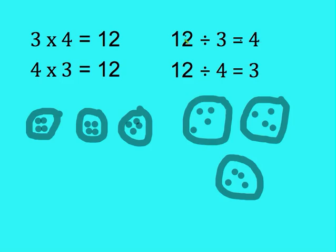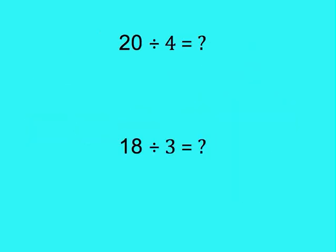So if you're trying to solve the division problem and you're missing one of the small numbers, you know you can find it by drawing equal sized groups. Let's practice another one together.